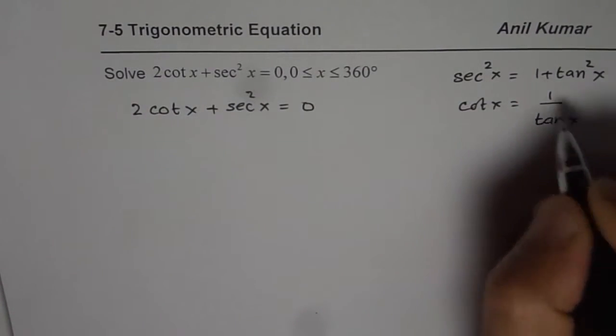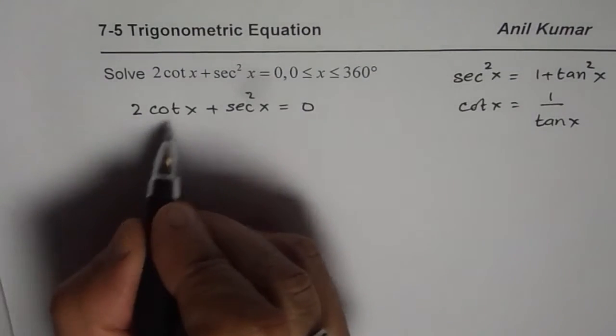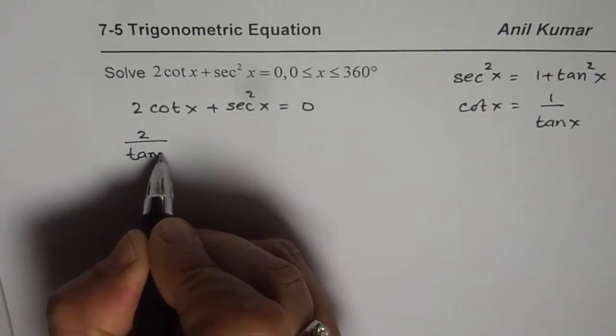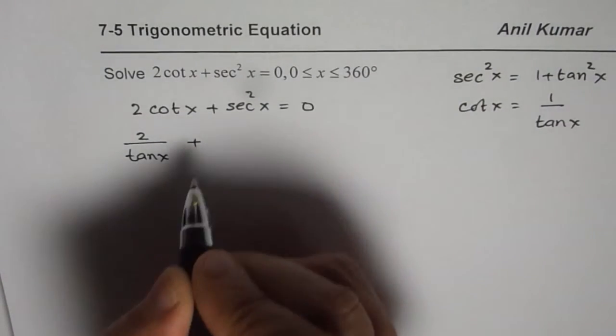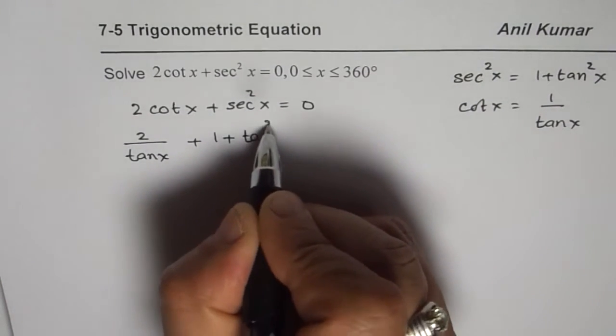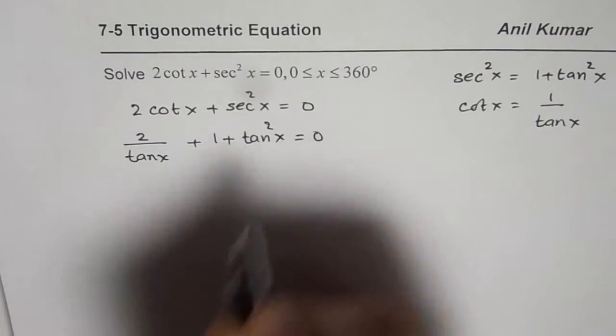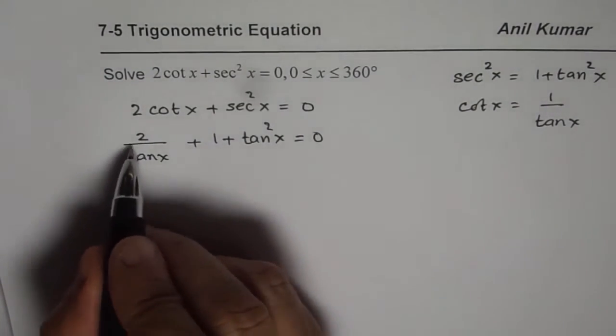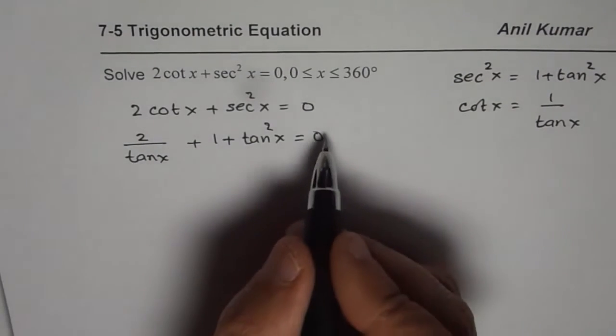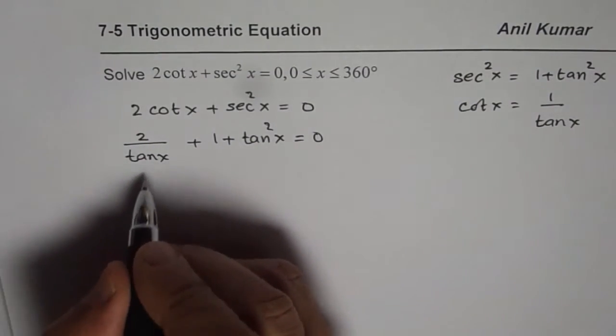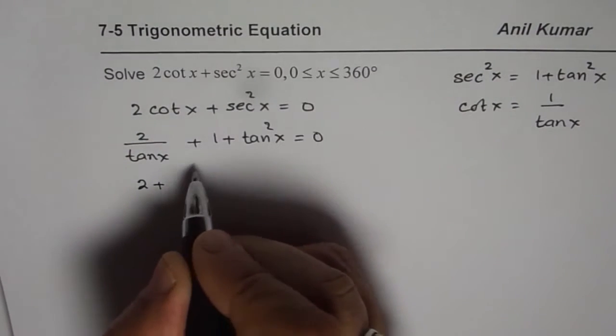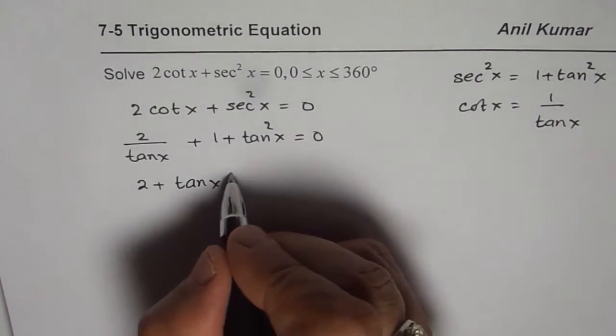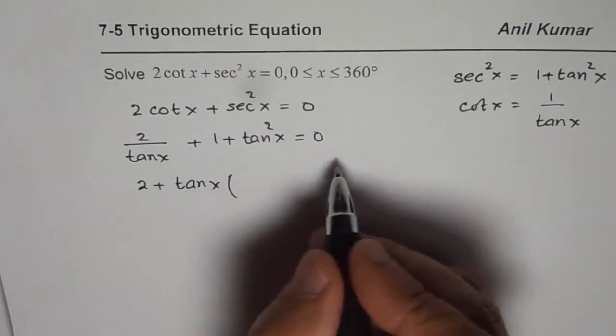So then we will get one equation in tan. So we will write 2 cot x as 2 over tan x and secant square x as 1 plus tan square x. So we now have one equation in just tan. So let's take a common denominator. Let's multiply by tan x on both the sides.